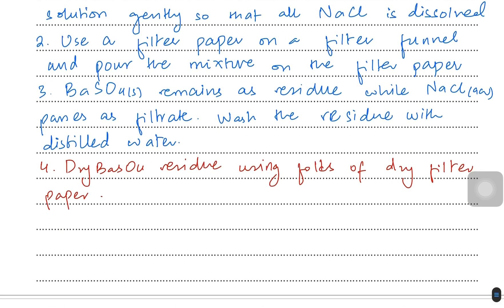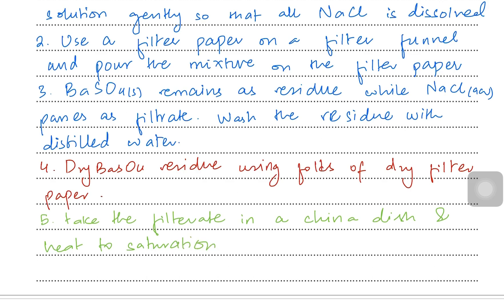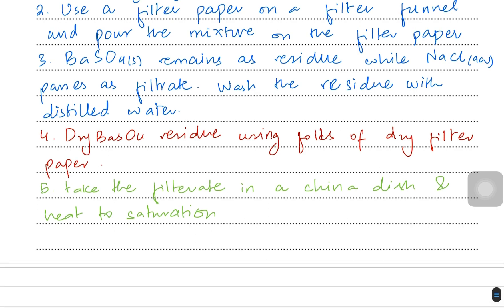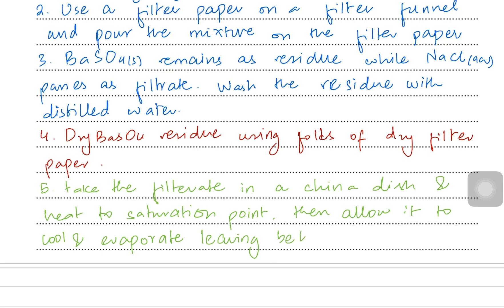For the sodium chloride, continue by saying: take the filtrate in a china dish and heat to saturation point. When you heat a solution it ultimately reaches a saturation point where it has the maximum solute dissolved in it. Then allow it to cool and evaporate — the water is going to evaporate leaving behind the crystals.